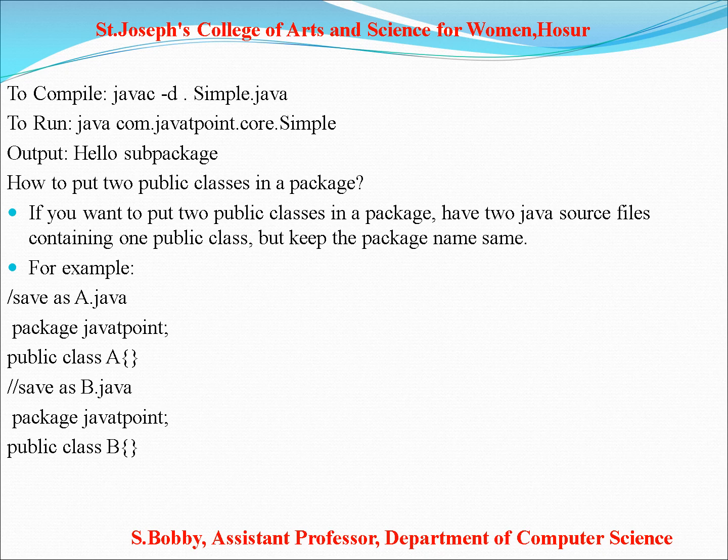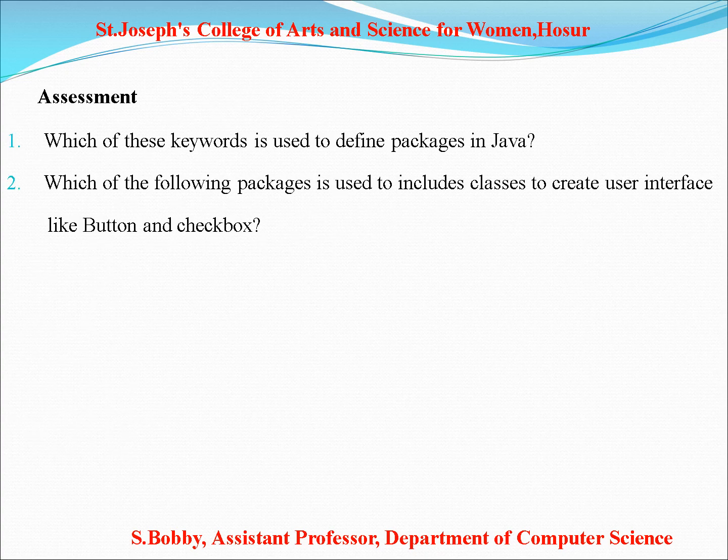How to put two public classes in a package: if you want two public classes in a package, have two Java source files each containing one public class, but keep the package name the same. For a.java, use package javatpoint with public class A; for b.java, use package javatpoint with public class B. If you have any questions, put the answer in the comment box.